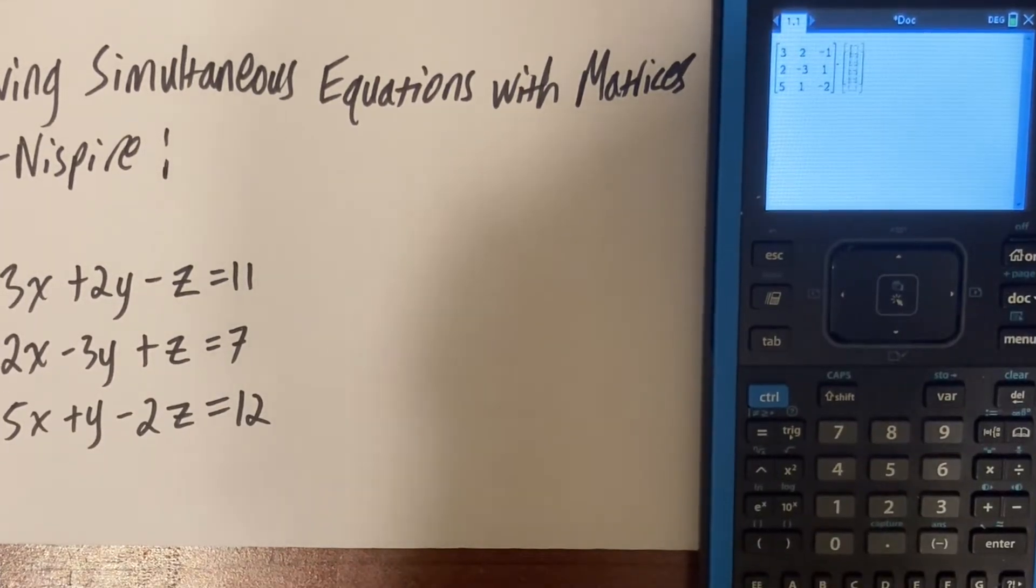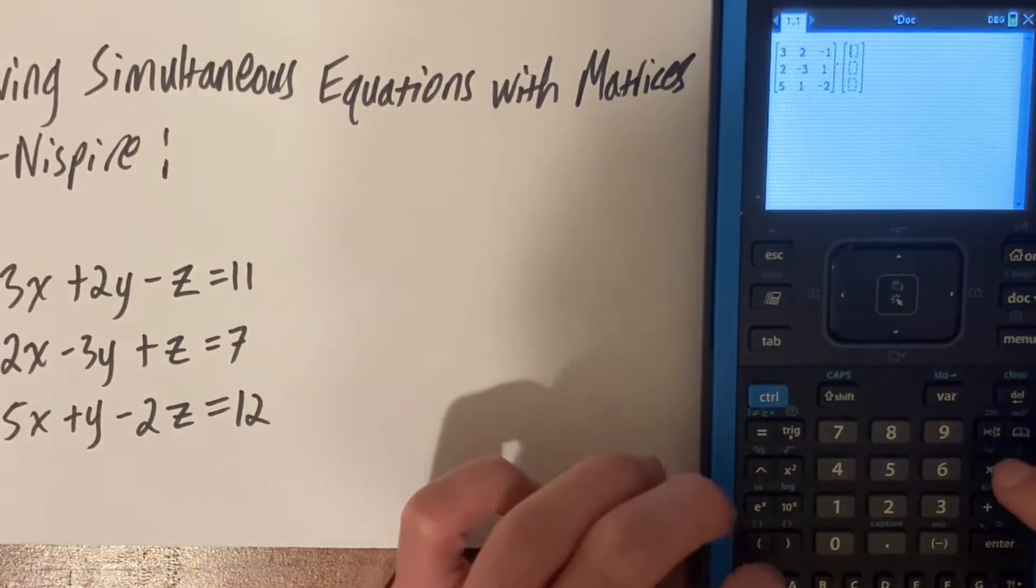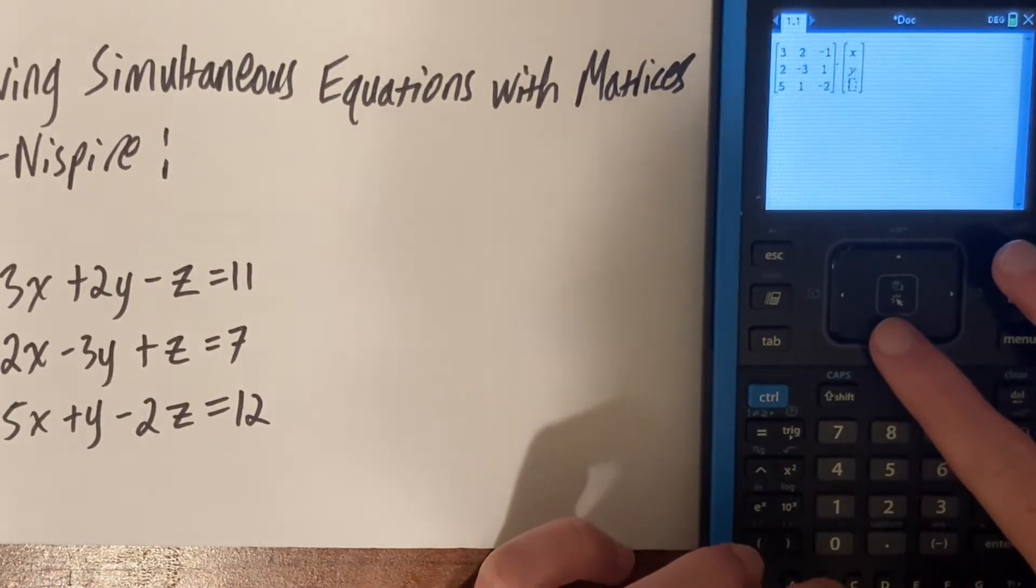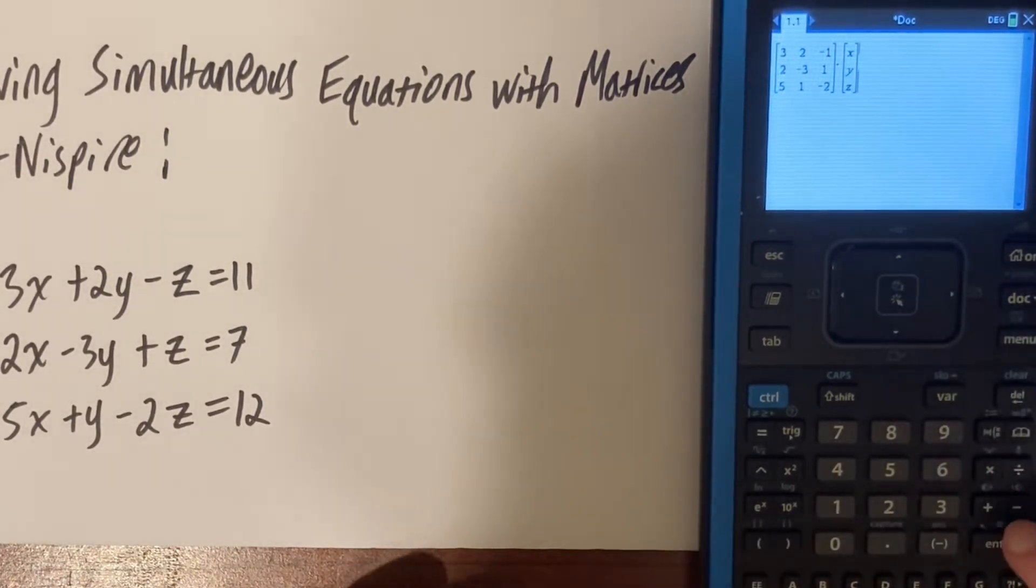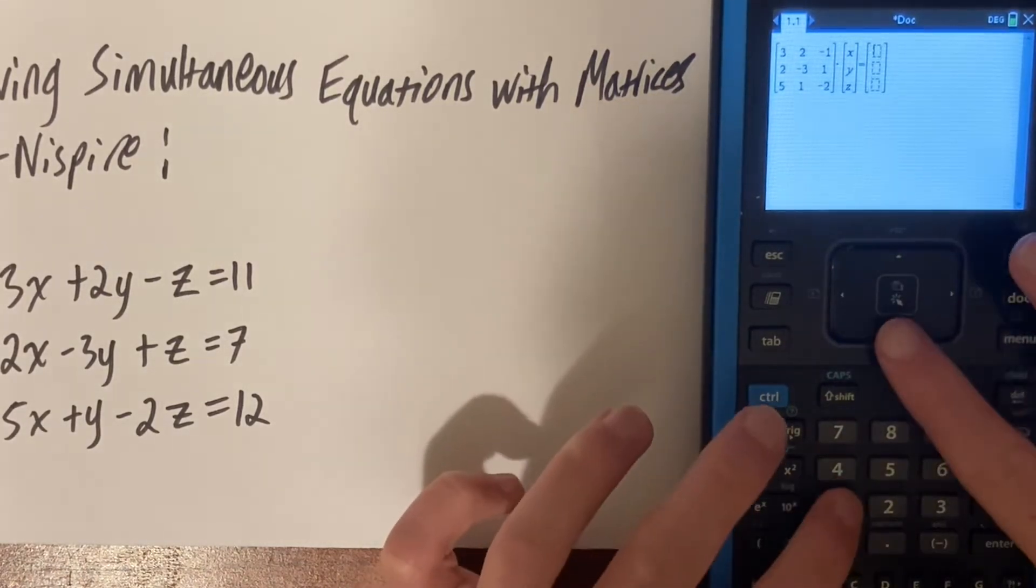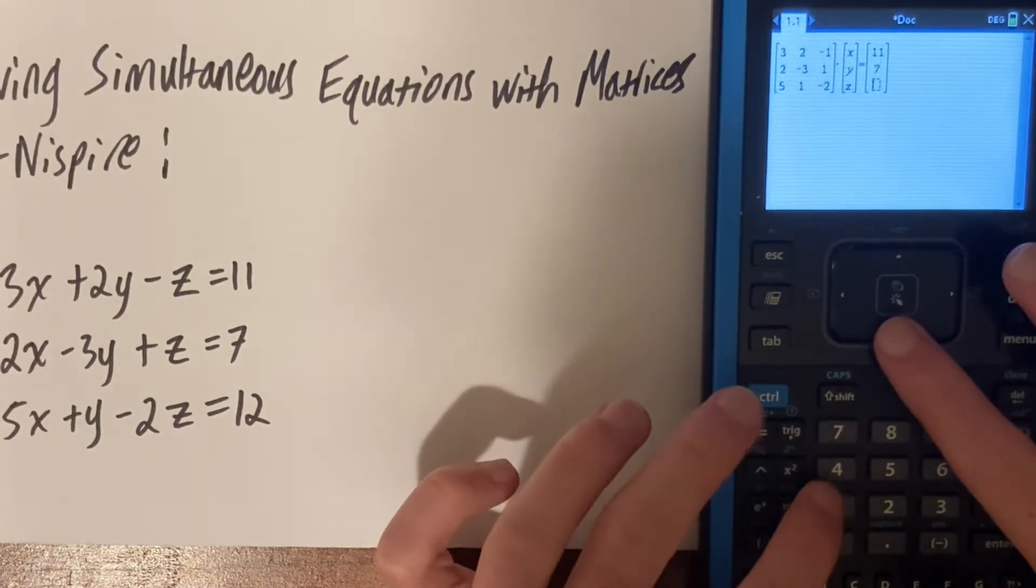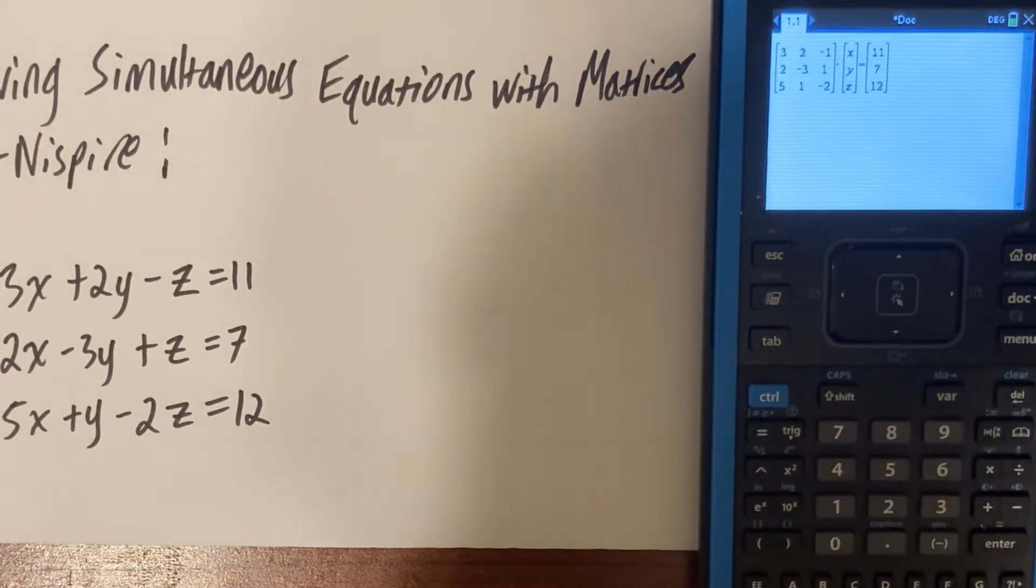Now, this next part is not necessary. I'm just doing it to show you what we're doing here. If we were to write this whole equation in matrix form, we would have our first part of the equation times our x, y, z, which is equal to, and then one more matrix with our answers.